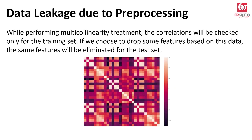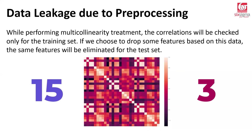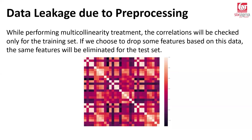The same holds for multicollinearity. Check multicollinearity only after splitting, and only on the train set. If you find certain features are correlated and need to be eliminated — whether through Pearson's correlation, variance inflation factor (VIF), or principal component analysis (PCA) — whatever you determine on training data gets extended to the test data. For example, if you drop three out of 15 features via VIF on training data, drop the same three features from the test data without rechecking. Your model has a fixed set of features; you can't have different features for train and test.